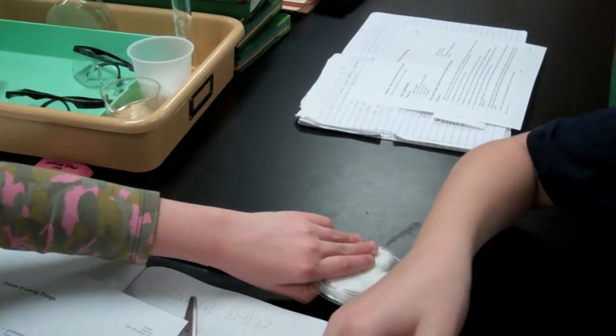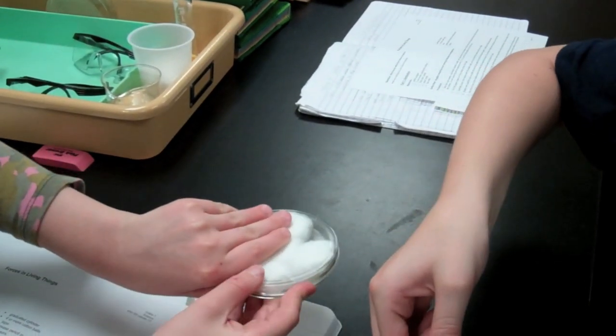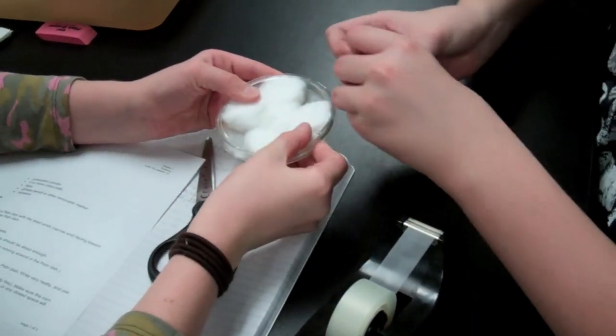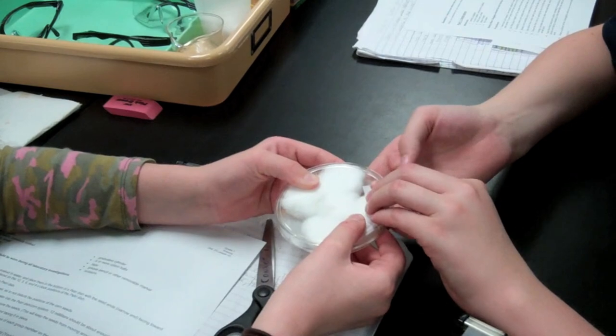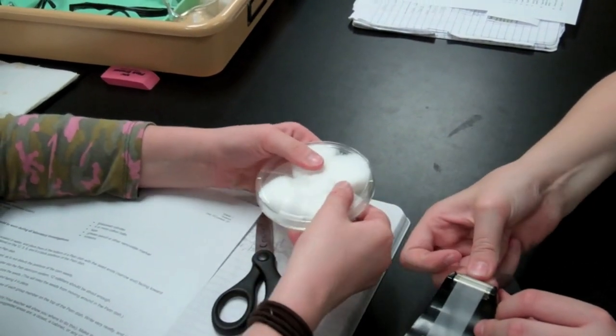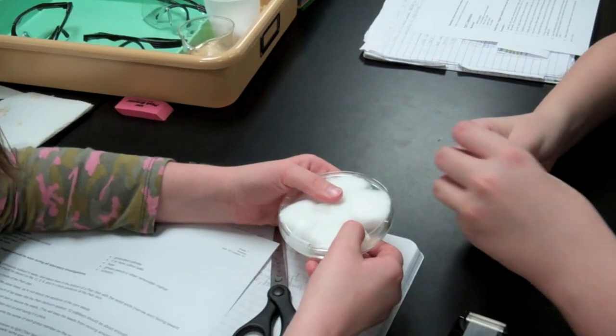After placing the cotton balls, we simply place the back side of the petri dish onto the front. This will allow the petri dish to stay secure as it stays in a vertical position in the cabinet. Simply take scotch tape and tape it around the outside edge, keeping the front side and back side securely in place.